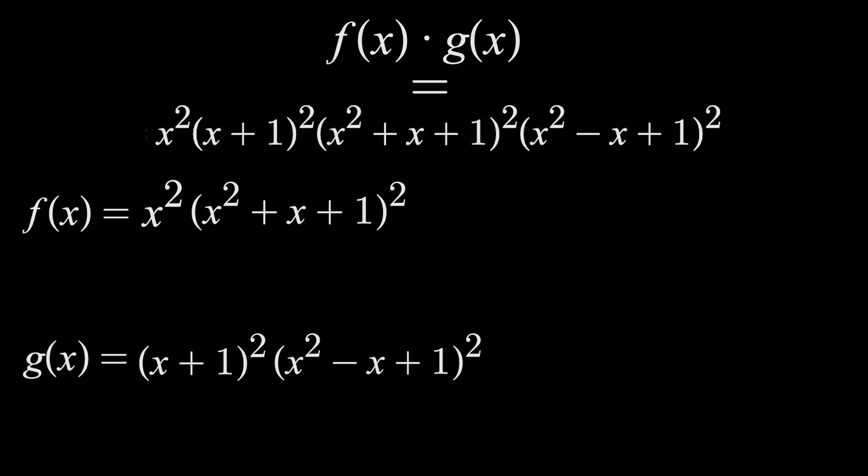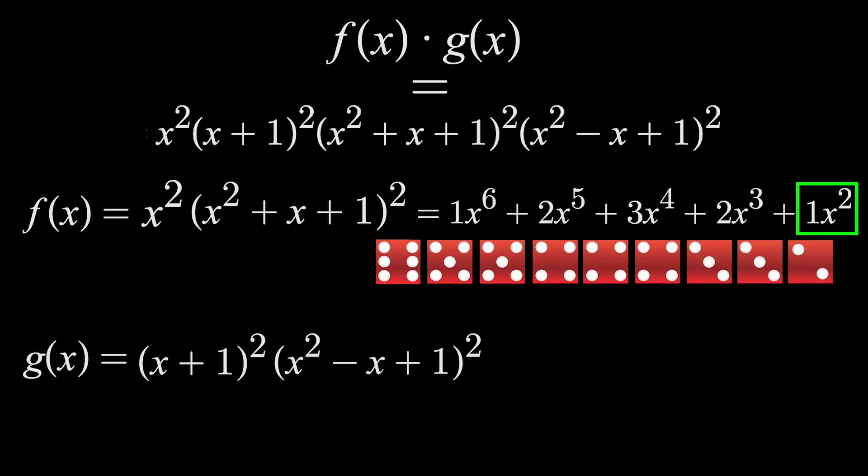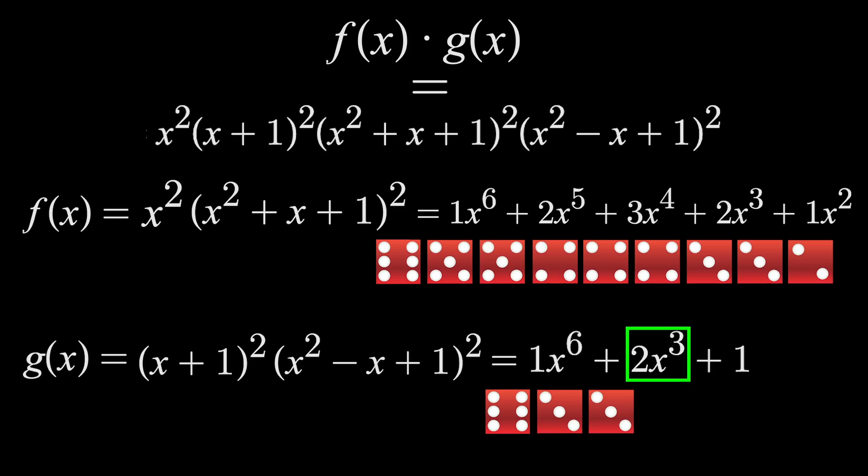But the problem is, if you multiply out the polynomial on top, you get this here, which says that your die must have one side labeled six, two sides labeled five, three labeled four, two labeled three, and one labeled two, which is a total of nine sides, not the six we're looking for. And in this example, the other die would have this generating function, meaning one side would be a six, two would be labeled three, and one would have to be labeled with a zero, because this is technically one X to the zero. So a total of four sides.